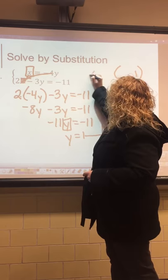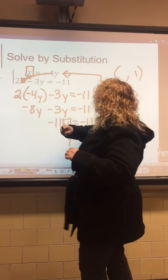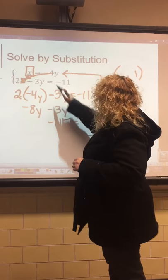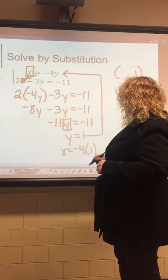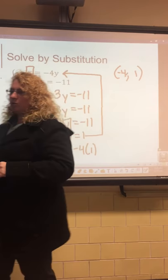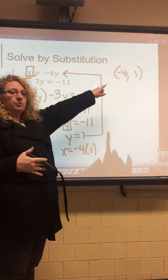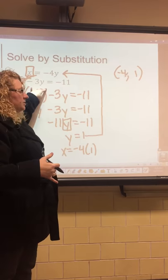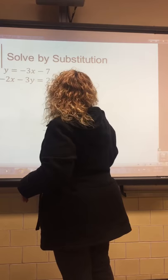Our solution so far is something-comma-1. We plug y equals 1 back into the isolated equation: x equals negative 4 times 1, which equals negative 4. So our solution for this example is negative 4, 1. You can always check your answer by plugging negative 4 and 1 into both equations to see if they're true — if one is false, you've made a mistake.